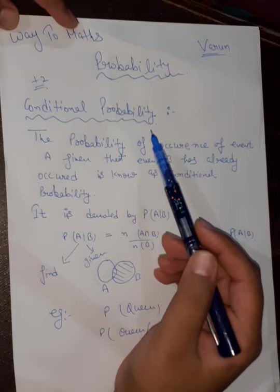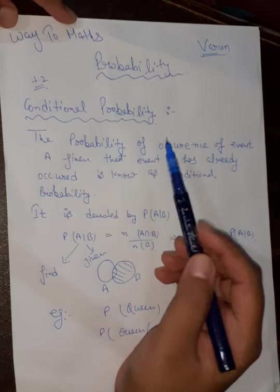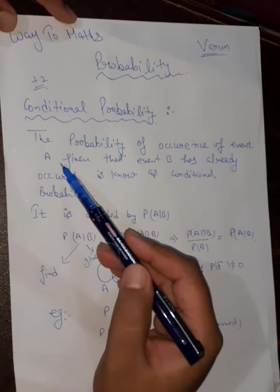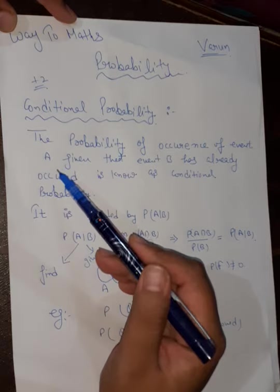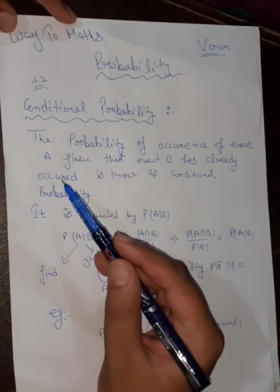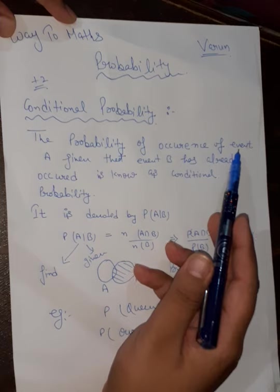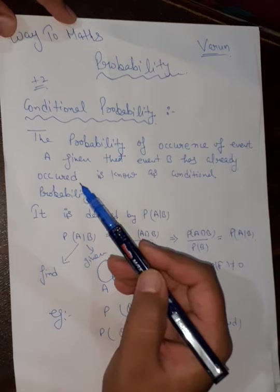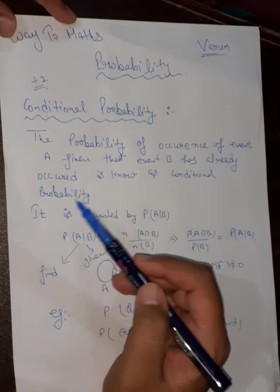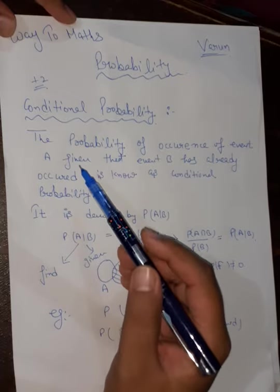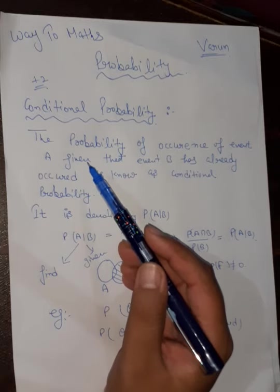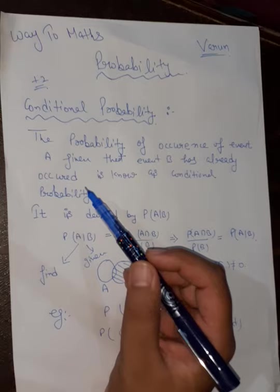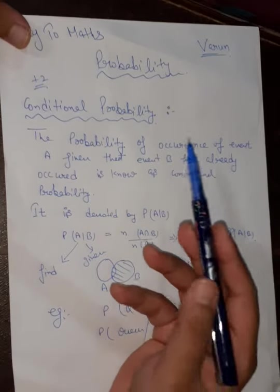Once again, welcome to my channel Way2Varun, or we can say Way2Maths. The probability of occurrence of event A — which you already studied in Plus 1 and 9th class — is to be found given that event B has already occurred. For example, in a coin toss there is a 50-50 chance of Head or Tail.